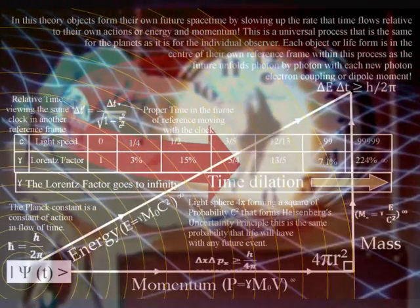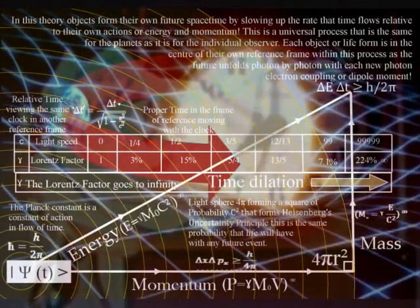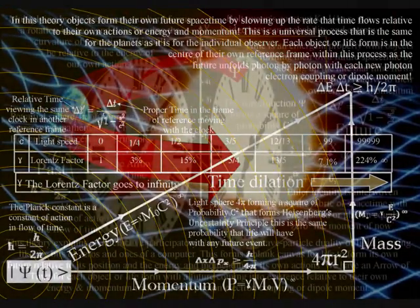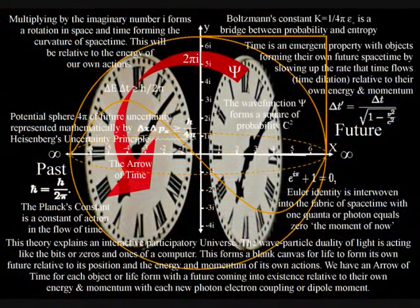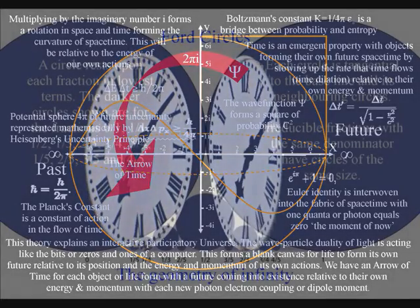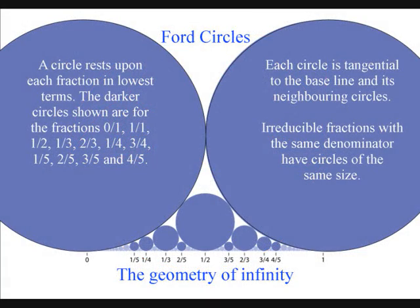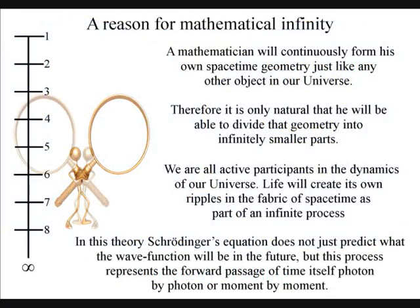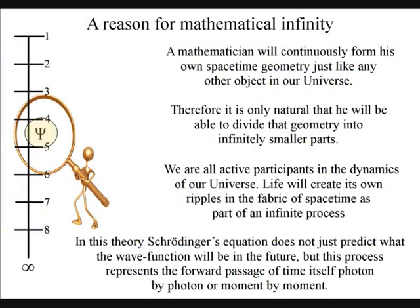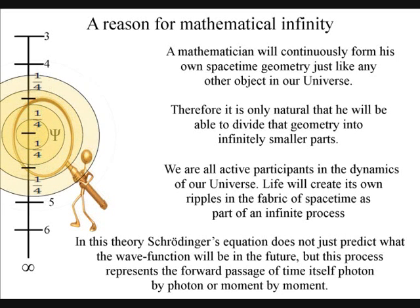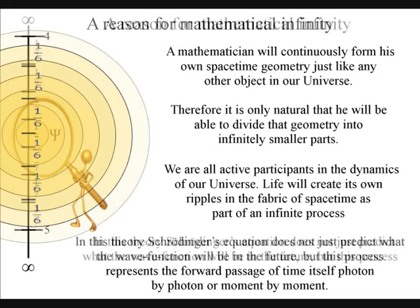This theory can explain the paradoxes of infinity because we have a process of continuous creation that we see and feel as time but as the geometry of space-time. A mathematician will interact with this universal process continuously forming his or her own space-time geometry. Therefore it is only logical that he will be able to divide that geometry into infinitely smaller parts as time unfolds.